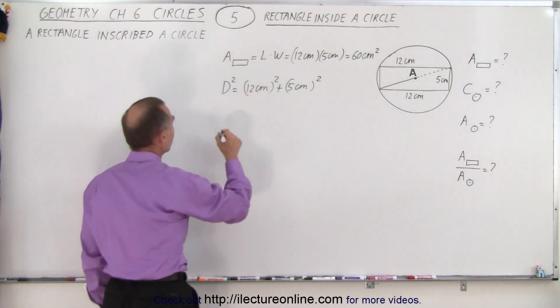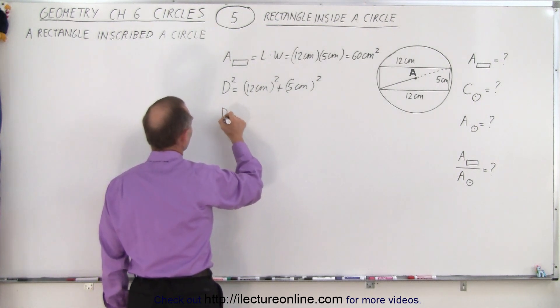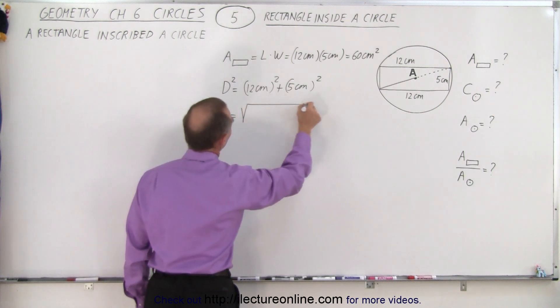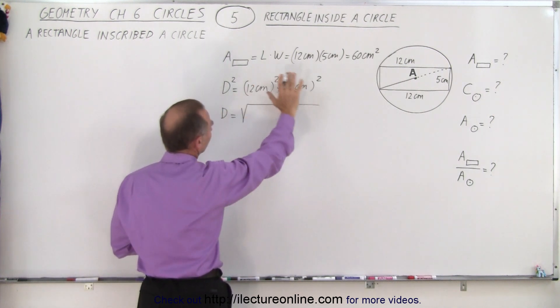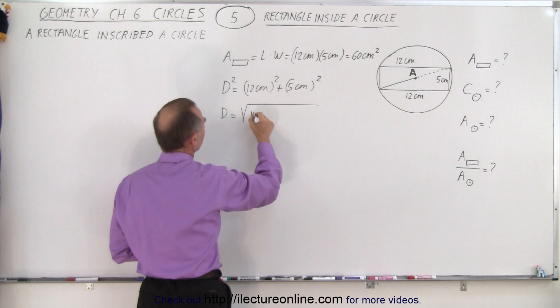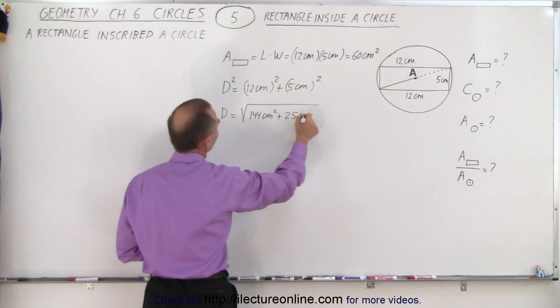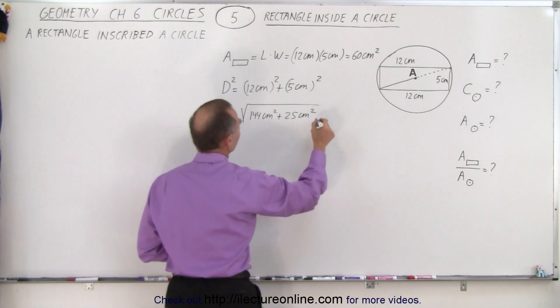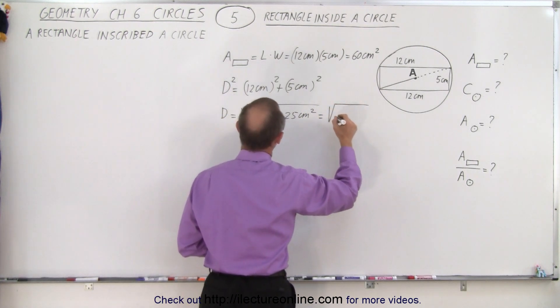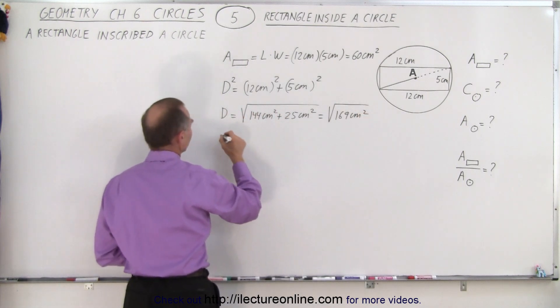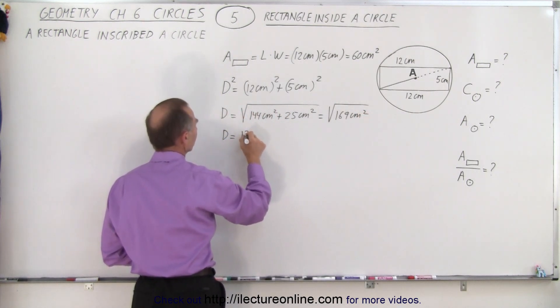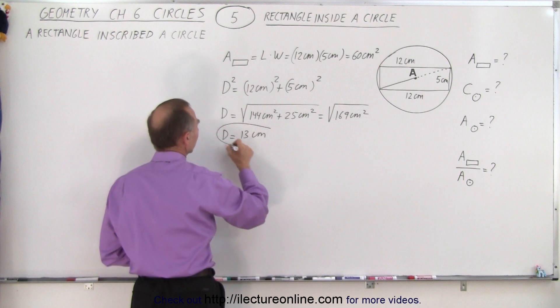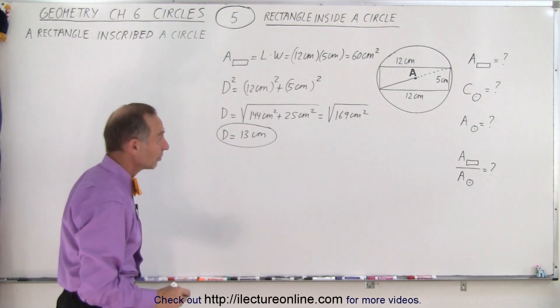We then say, well, that means that the diameter is equal to the square root. By taking the square root of both sides, I take the square root of this. So it would be 144 centimeters squared plus 25 centimeters squared. So this is equal to the square root of 169 centimeters squared. And then if we take the square root of that, we get 13 centimeters. So now we know that the diameter of the circle is 13 centimeters.